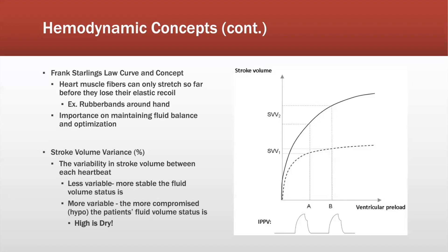There's a certain amount of preload — the volume that fills the heart — that reaches a point where it can't take any more volume, stretching the fibers so far that recoil is poor. Therefore your cardiac index and cardiac output will decrease. Moving on to stroke volume variance: this is the variability in stroke volume between each heartbeat. Normal stroke volume is 60 to 100. If stroke volume is less than 60, your patient typically needs more volume. High variability — for example, beats of 40, 60, 30, 50, 20, 80 — means the patient is compromised and has low volume status, so you need to add more volume to increase preload.